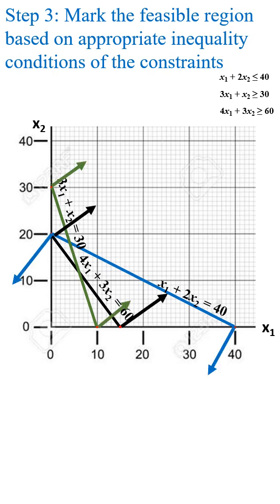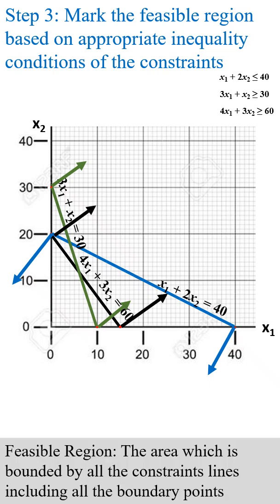Next, mark the feasible region based on the inequality symbol of each constraint. Then mark the area bounded by all the constraint lines.